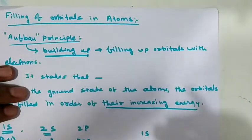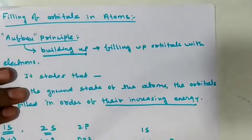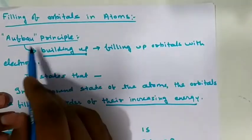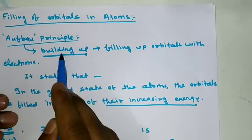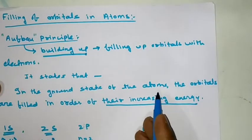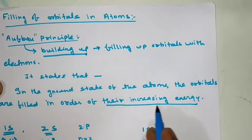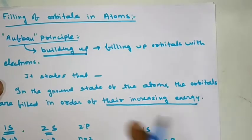I have different orbitals, and different orbitals are filled with electrons. The first rule is the Aufbau principle. Aufbau is a German word meaning 'building up.' Building up means filling up orbitals with electrons. In the ground state of the atoms, the orbitals are filled in order of their increasing energy.